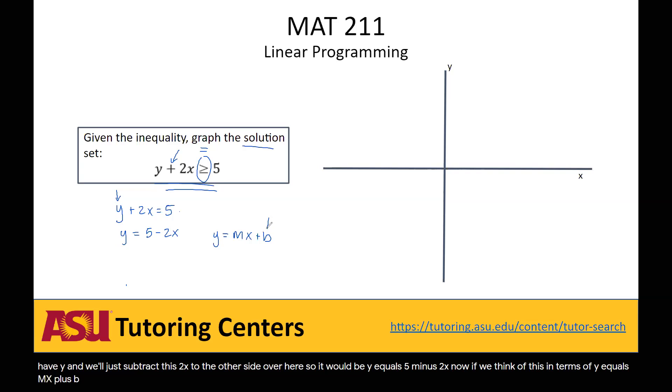If we think of this in terms of y equals mx plus b, this is our intercept, which in this case is y equals 5. And this is going to be our slope, so negative 2.